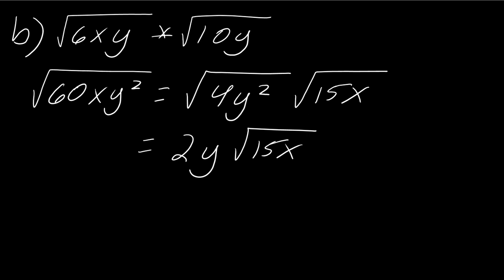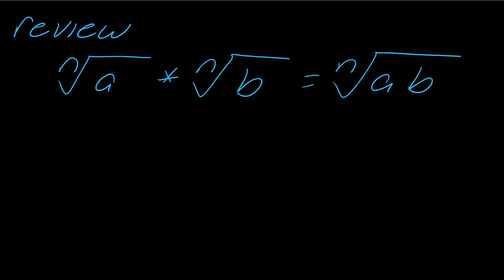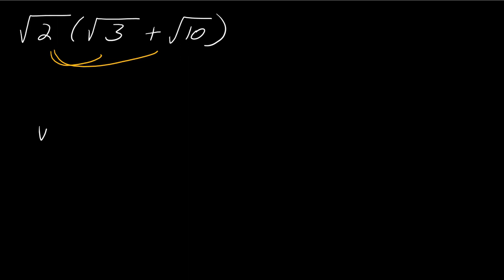So now what we're going to look at are things like distributing a radical into other radicals. It's begging for you to distribute. So I'm going to go ahead and multiply this by both parts, exercising the radical rule when I multiply things together. In this case, this will be the square root of 6 plus the square root of 20.